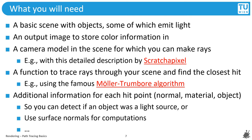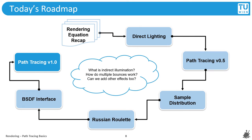This is today's roadmap. After a quick recap, we will see how the rendering equation gives us accurate direct lighting and how to implement it for easy extension to full path tracing. We will get a first solution using Monte Carlo integrals, then address sample distribution. To make renderings physically correct, we will look at Russian Roulette for path tracing, followed by a dedicated BSDF interface. Eventually, we will arrive at version 1.0 of a path tracer, which will serve as the basis for upcoming lectures.